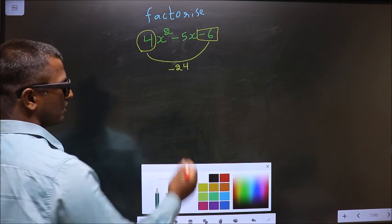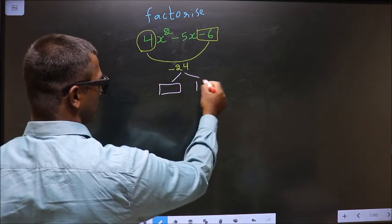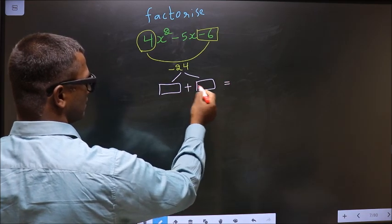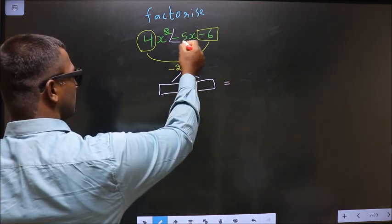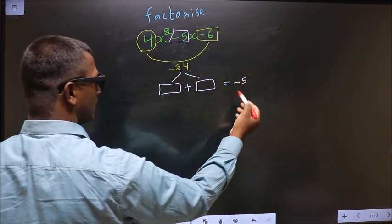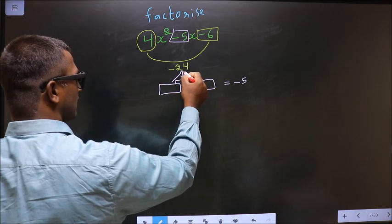Now, you should look for two numbers such that when you add the two numbers, you should get the middle coefficient which is minus 5 here. And also, when you multiply these two, you should get minus 24.